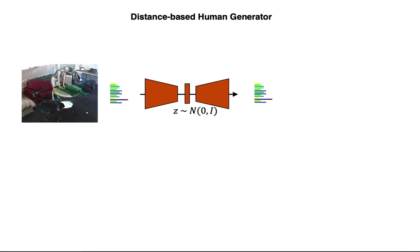Given this representation, we design a human generator. Given the body and scene mesh pair, we compute the body-bps feature, which indicates distances between the body and selected scene vertices, and train a variational autoencoder to reconstruct such distances.